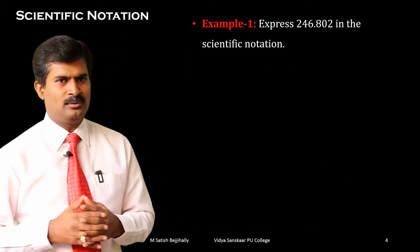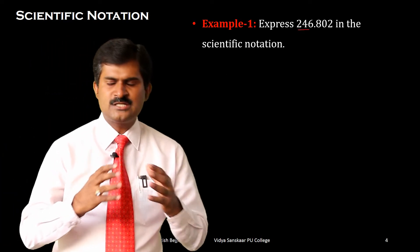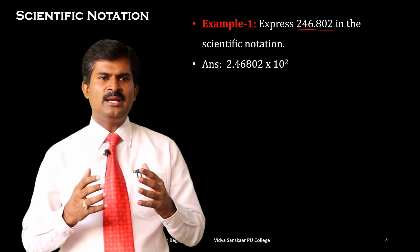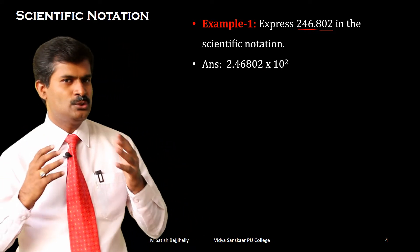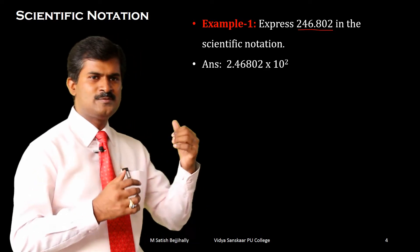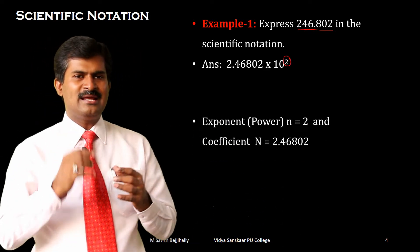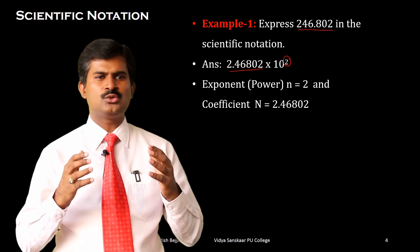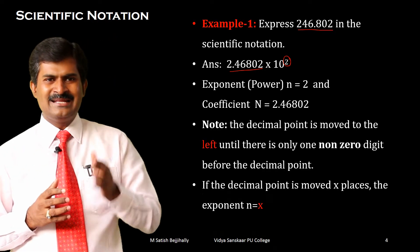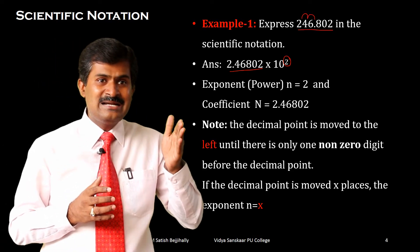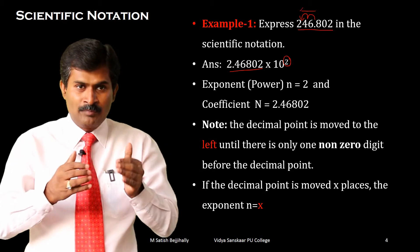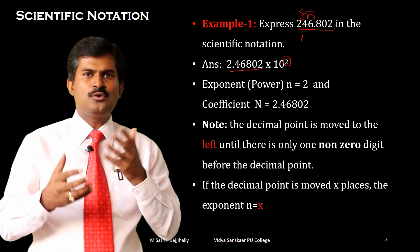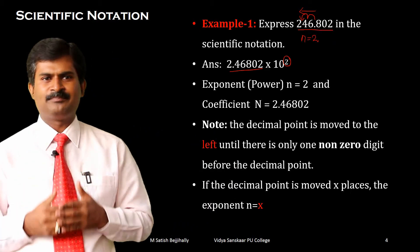Let us take an example: express 246.802 in scientific notation. The answer will be 2.46802 into 10 to the power of 2. The exponent, small n, is equal to 2, and the coefficient, capital N, is equal to 2.46802. Note that the decimal point is moved to the left until there is only one non-zero digit before the decimal point. If the decimal point is moved x places to the left, the exponent will be n equals x.